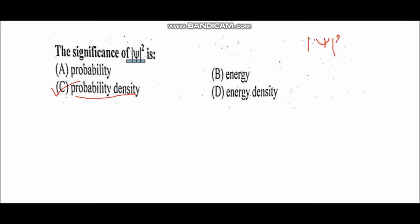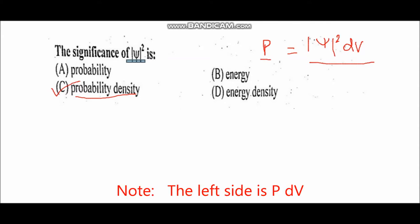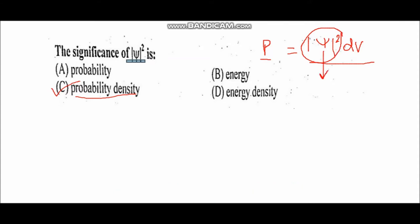Question number two: the significance of |ψ|² is probability density. |ψ|² signifies the probability density. If you consider the probability density over a specific range, volume, length, or area, this becomes the probability of finding a particle in a certain region. So |ψ|² which equals ψ* times ψ, represents the probability density.